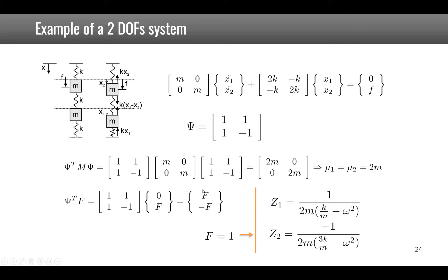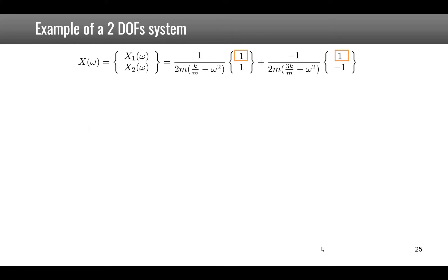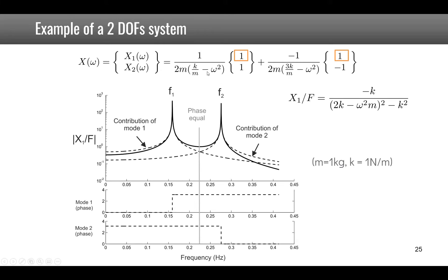Setting F equal to 1 for a unit response, z_1 is computed with omega_1-squared = k/m and z_2 with omega_2-squared = 3k/m. For x1(omega), the mode shape values are both 1 for both mode shapes on the first degree of freedom. Rearranging the terms in the denominator gives exactly the same solution as the analytical result, confirming the decomposition into two independent single DOF systems.